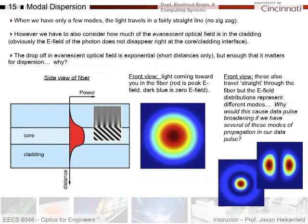So, when we have only a few modes left, light travels in a fairly straight line, no zigzag. You're like, wait a second, if it's in a straight line, why do I have more than one mode? Well, what we have to also consider is how much of the evanescent optical field, or electric field, is in the cladding. Because, obviously, if I have a photon moving down in here, and it has an E field to it, if you looked at when we do E and M fields, and you looked at a positive charge, it basically is strongest when you're near the peak E field, and it decays with distance.